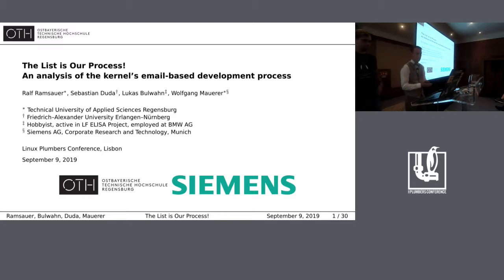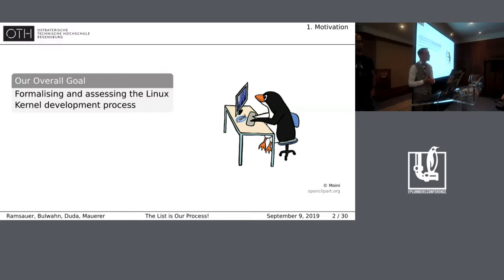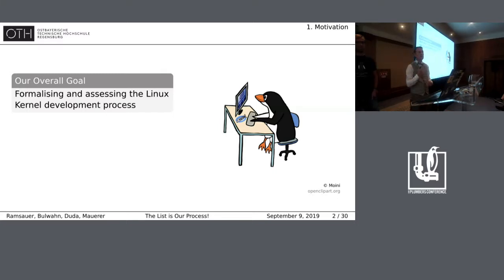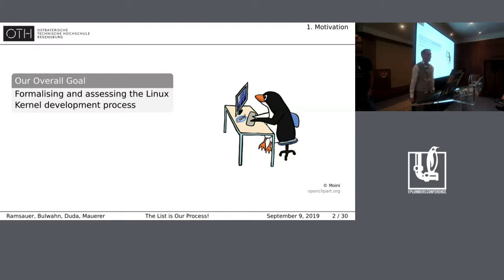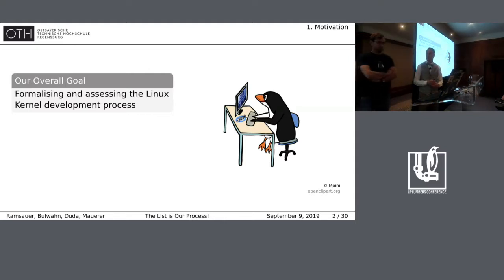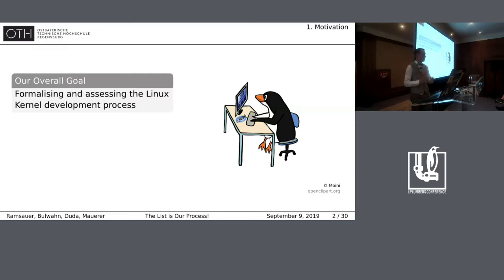So the list is our process — that's actually the answer to the question: how does Linux kernel development work? And if you ask around, the short answer is, well, the list is our process. But we want to understand this a little bit more, in more detail. This means actually formalizing and assessing the Linux kernel development process. Before you're afraid — formalizing sounds like a big word, but as you'll see later, it's not that complicated.